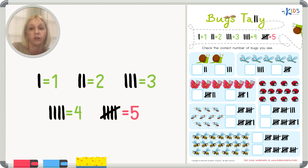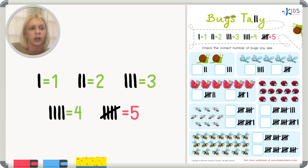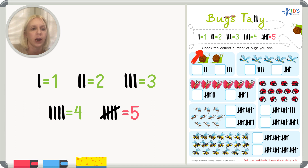When you have a lot of numbers, you can see this really fast — a crossed group is five. It's like counting by fives: 5, 10, 15, 20. You get a bunch of numbers really fast. This is kind of like counting by fives, but keeping track of it with tally marks.